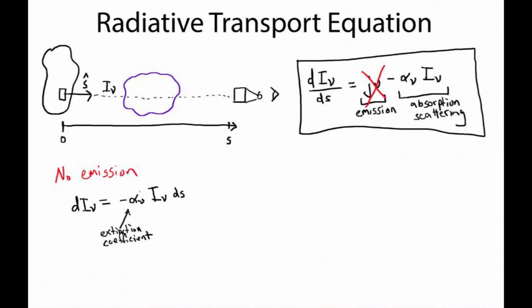We can see from writing the equation this way that the change in specific intensity must have the same units as specific intensity. Since ds has units of distance, the extinction coefficient alpha-sub-nu must have units of inverse length. If the extinction coefficient is constant over s — meaning it doesn't depend on s — then the no-emission case is essentially saying the change in I-sub-nu is equal to a constant times I-sub-nu when you take the derivative versus distance.